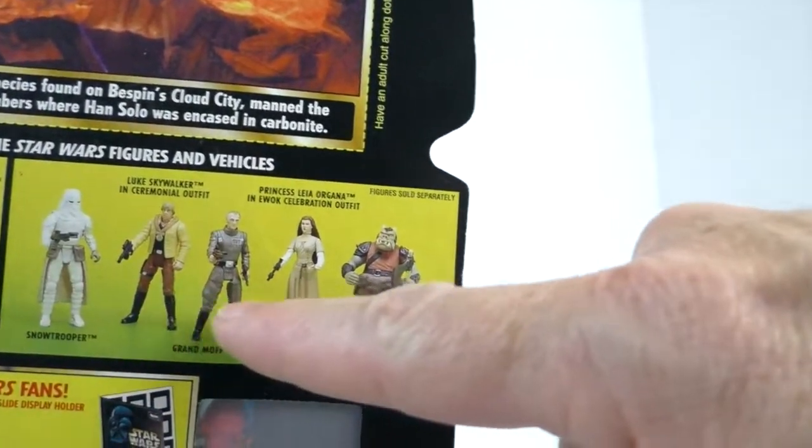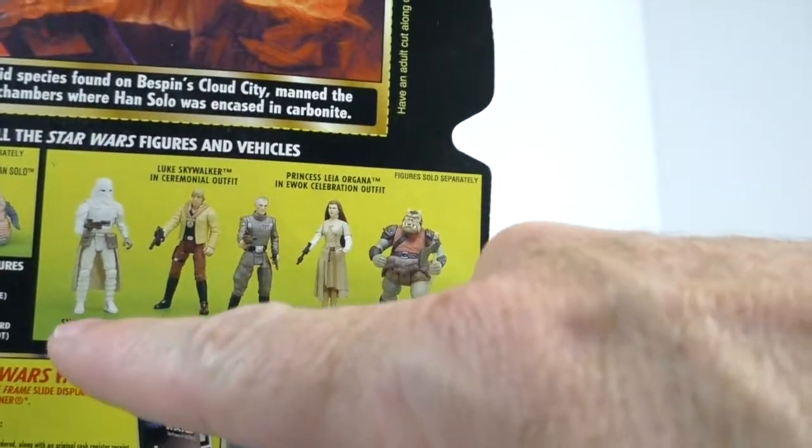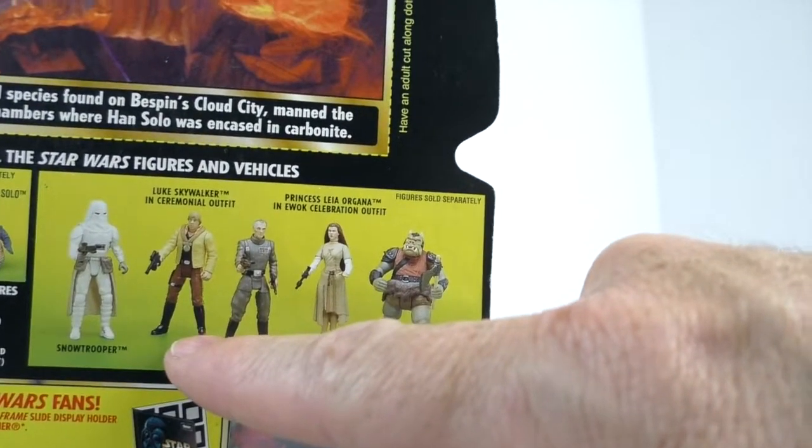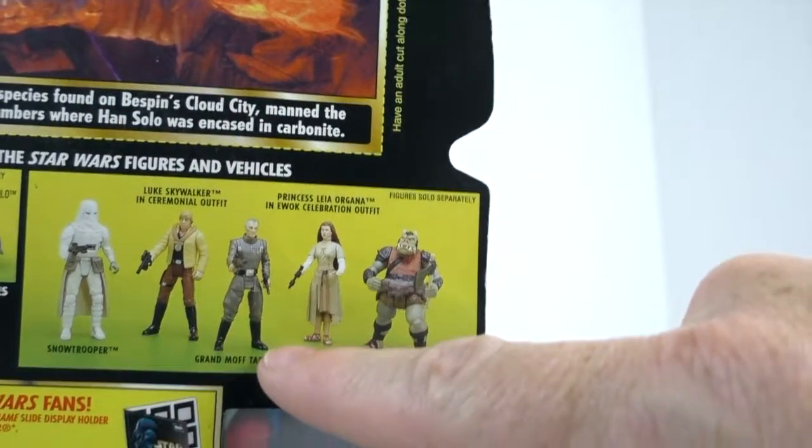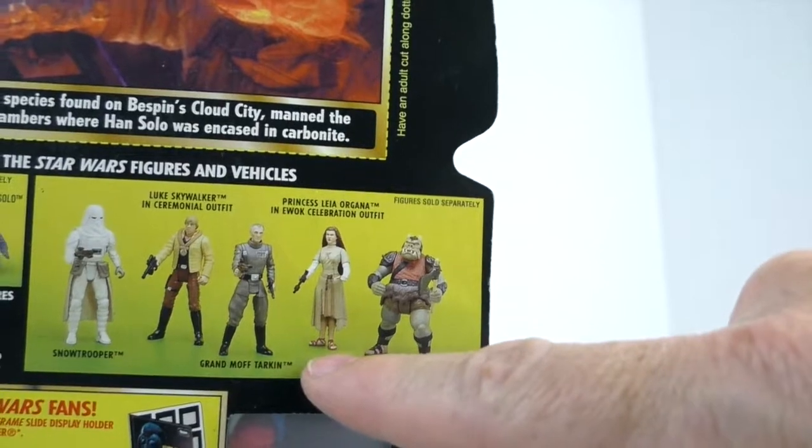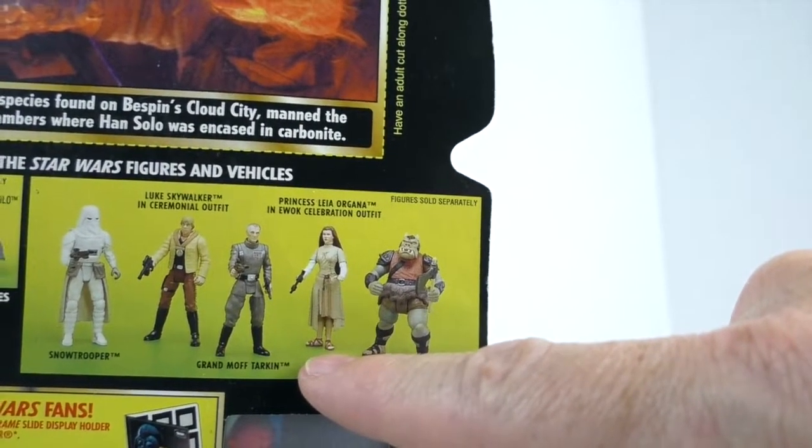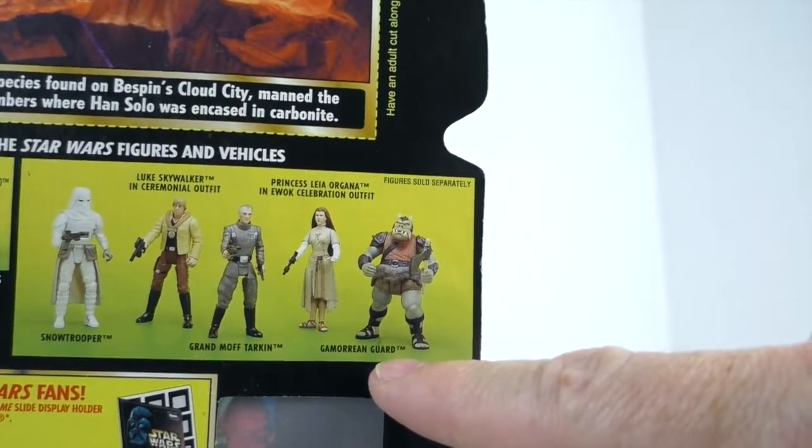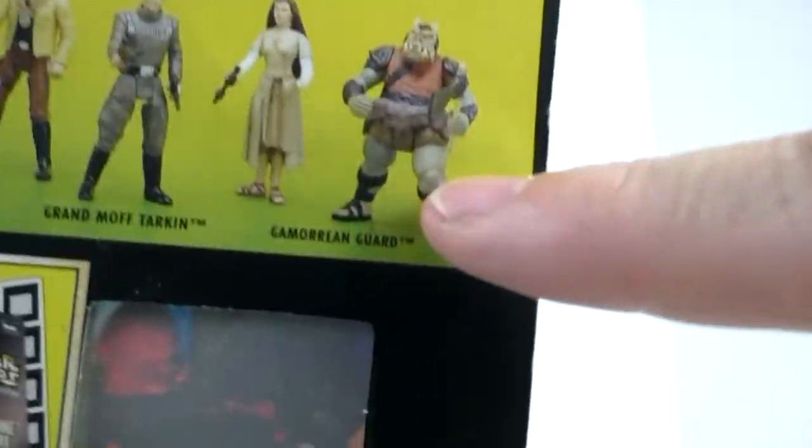On the back, again it has the order form for the booklet to store your freeze frames, and it shows some of the figures that were available at this time: the Snow Trooper, the Luke Skywalker ceremonial outfit, the Grand Moff Tarkin, Princess Leia in Ewok celebration outfit, and the Gamorrean Guard with those huge legs.